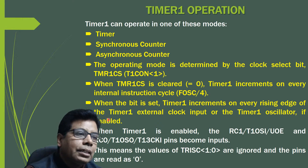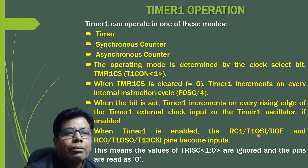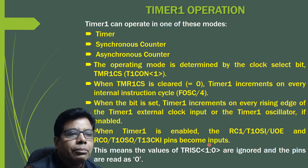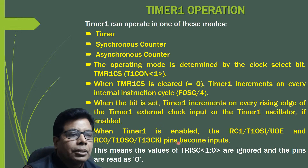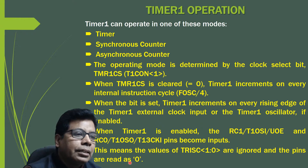When Timer 1 is enabled with an external clock, pins RC1/T1OSI and RC0/T1OSO become inputs, so the appropriate external circuit must be connected. The TRISC values for these pins are ignored and the pins are read as 0.